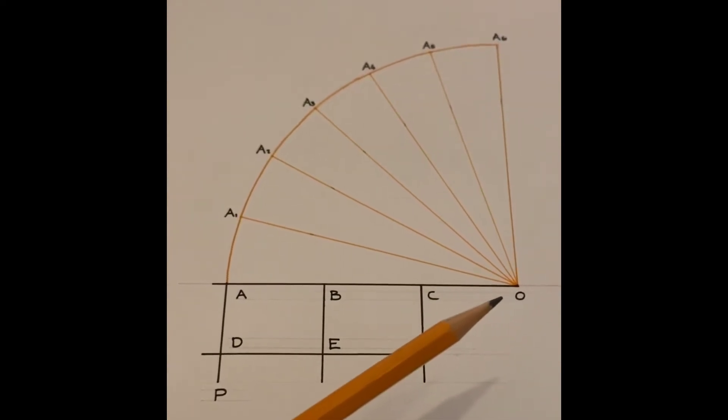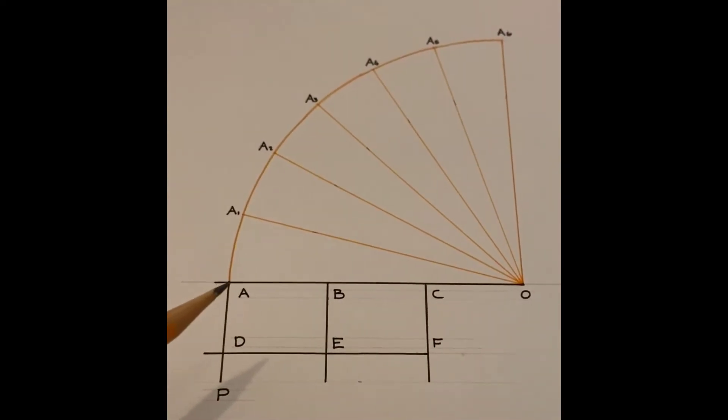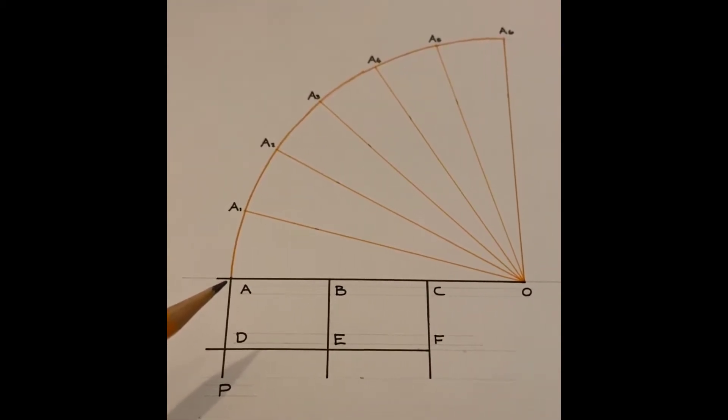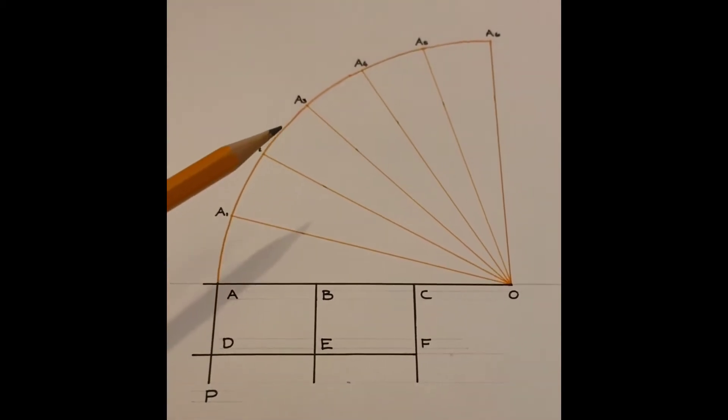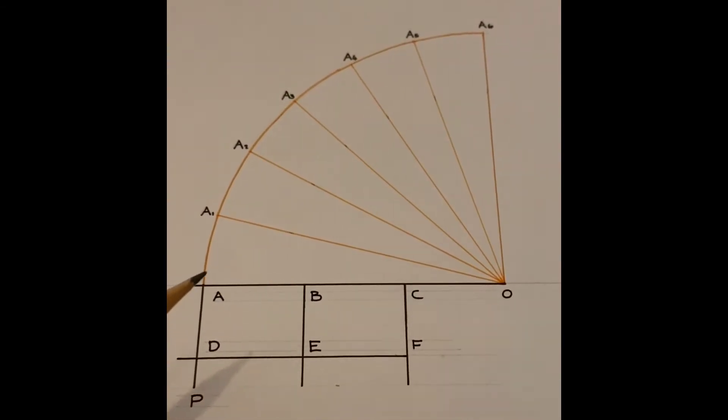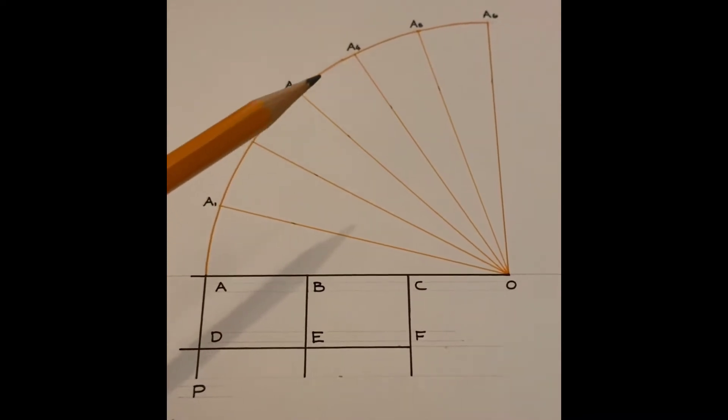So with the point of your compass on O and radius OA stretch out your compass to pick up A and then swing a quadrant of a circle up and this is the path that A will follow as this barrier lifts up.